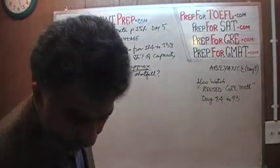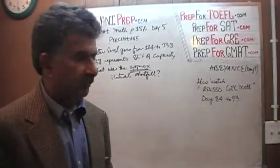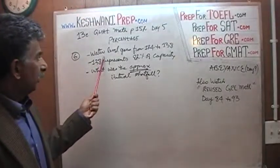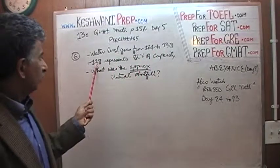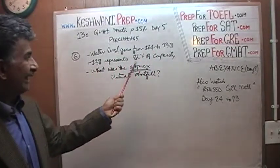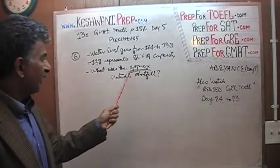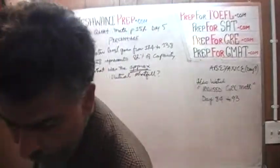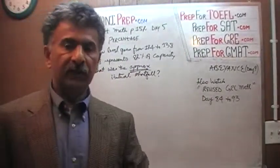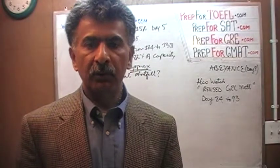Turn to page 152 and read the problem to yourself. Here's the gist of it. We are told that the water level has gone up from 124 to 138. We also told that this 138 represents 82% of the capacity of the reservoir. The question simply is, what was the approximate initial shortfall? In other words, before the rainstorm, how short was the reservoir compared to what its capacity is?